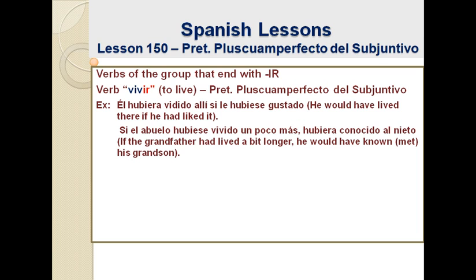In Spanish, to say 'met his grandson' we use the verb 'to know' — so we literally say 'to know his grandson' but we mean 'to meet his grandson.' Si el abuelo hubiese vivido un poco más, hubiera conocido al nieto. Inside the if-clause, we use hubiese — 'hubiese vivido,' had lived. Outside of the if-clause, when talking about what would happen if the condition is met, we use hubiera — 'hubiera conocido.' So, hubiese and hubiera: try to see when one is used and when the other one is used.